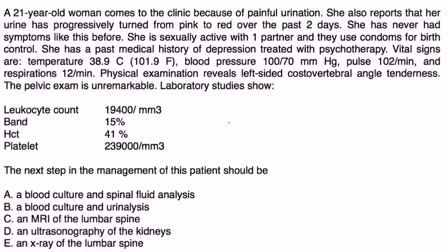Let's look at some clinical vignettes. A 21-year-old woman comes to the clinic because of painful urination. She also reports that her urine has progressively turned from pink to red over the past two days. She has never had symptoms like this before. She is sexually active with one partner and they use condoms. She has a past medical history of depression treated with psychotherapy. Vital signs: temperature 101.9, blood pressure 100/70, pulse 102, respirations 12.